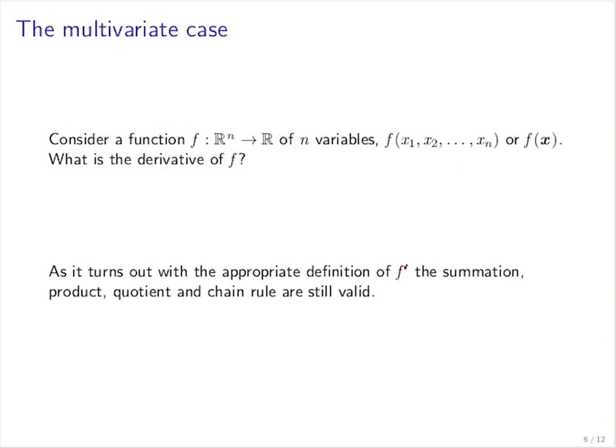So now in the multivariate case, we start simple and we assume that f is a function that maps from n variables to a scalar. And what we'd like to know is what is the derivative of f. And as it turns out, if we define the derivative in a nice way, then the summation rule, the product rule, the quotient rule and the chain rule will be still valid in this multivariate case.